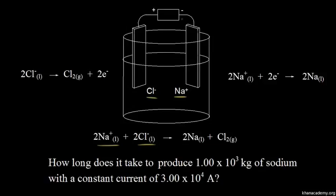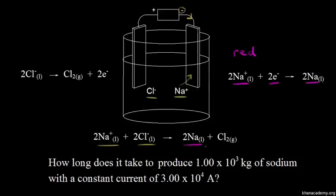Remember, in an electrolytic cell, the negative terminal of the battery delivers electrons — in this case, to the electrode on the right. When those liquid sodium ions come in contact with those electrons, we get a reduction half-reaction. Sodium ions gain electrons and are reduced to form liquid sodium metal, which is one of our products. This would form at the cathode.